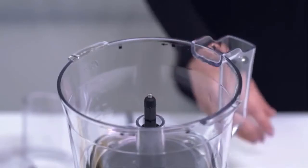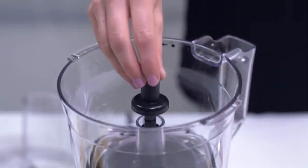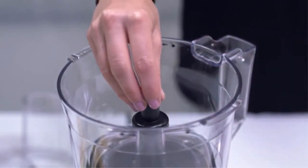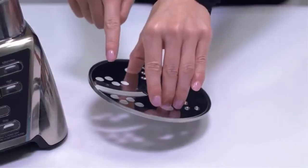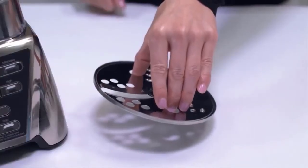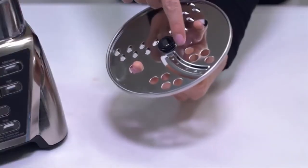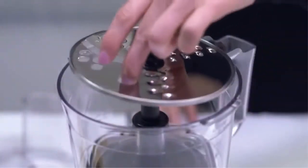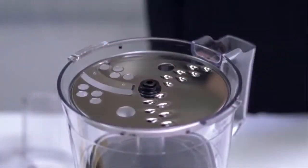To use the slicing disc, place the bowl onto the adapter but now also place the small adapter onto the center post. The disc has two sides, one for slicing and one for shredding. Choose the side suitable for your job and carefully place the disc over the post using the finger holes to position. Place the cover on the bowl by pressing down and turning counterclockwise until it locks in place.